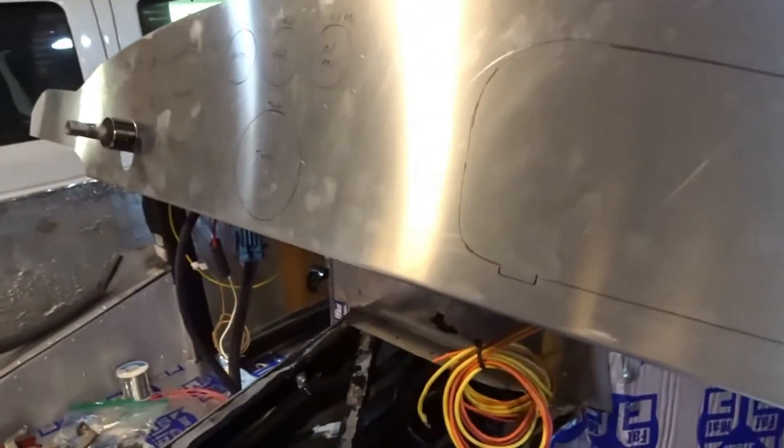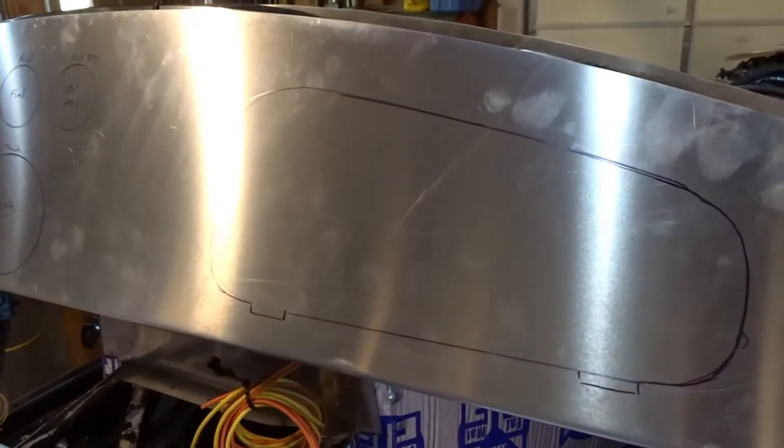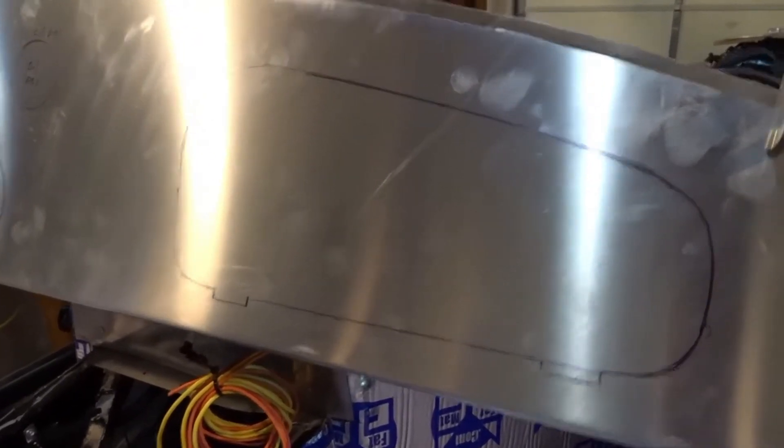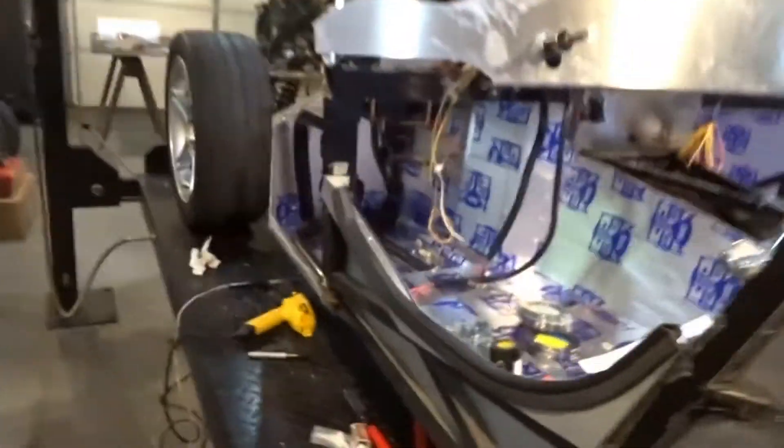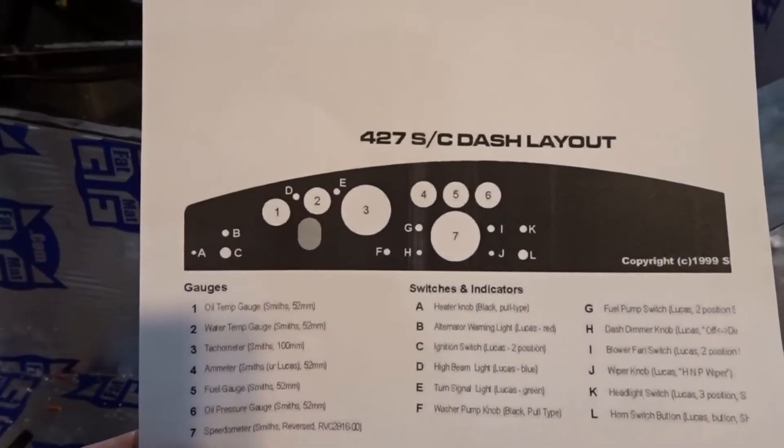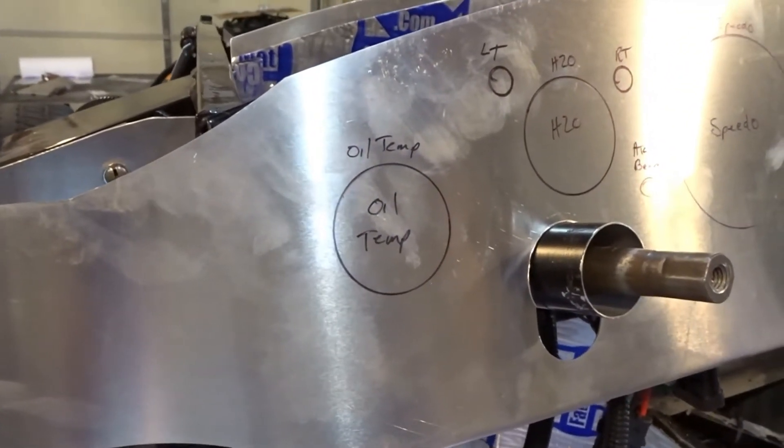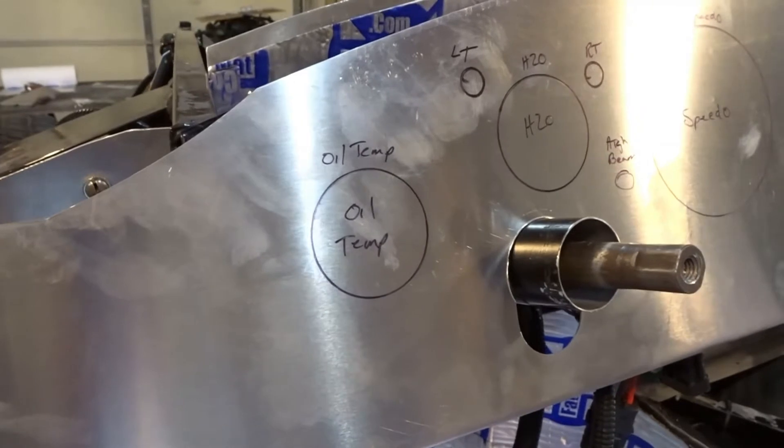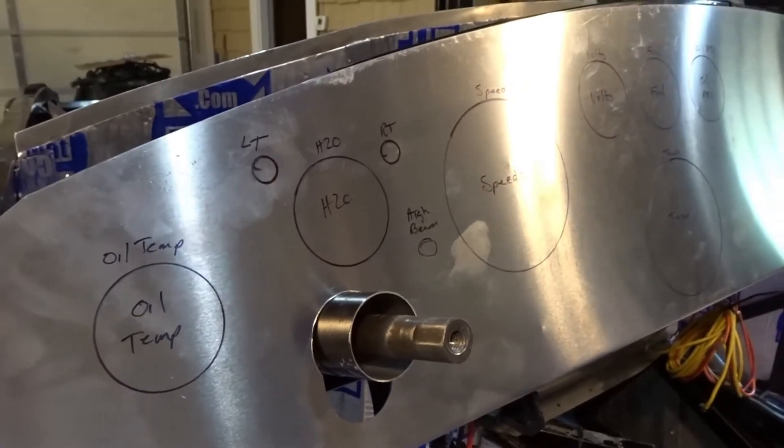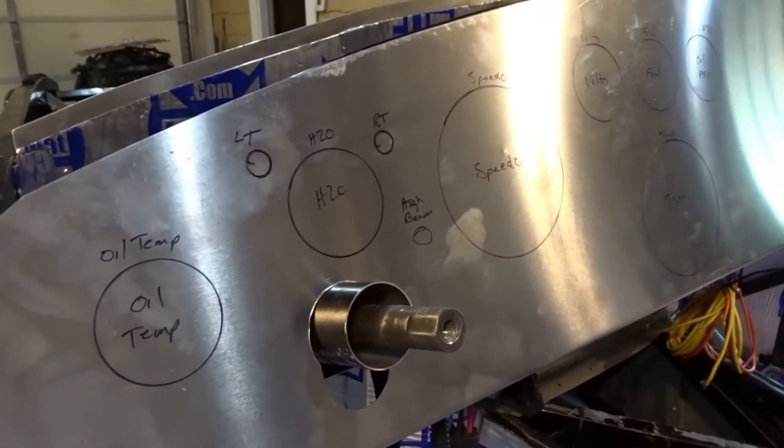I did a quick layout of the dash. I have the template laid out for the glove box. And then we used this layout to lay out all of the different gauges on the dash. I haven't drilled any of these holes or hole sawed out for the big ones because Michael wants to double check. This is where he wants everything.